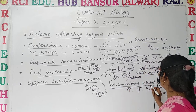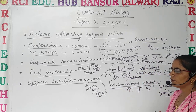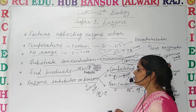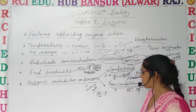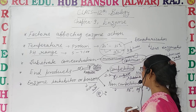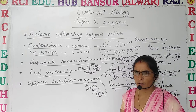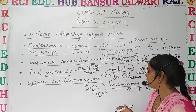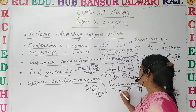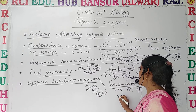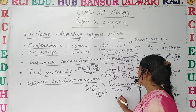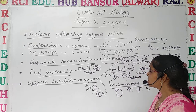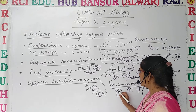Non-competitive inhibitors cause non-competitive inhibition. They do not have the same shape as the substrate, but they themselves bind with the active sites of the enzyme. They do not compete with anyone — they directly bind with the active sites of the enzyme.